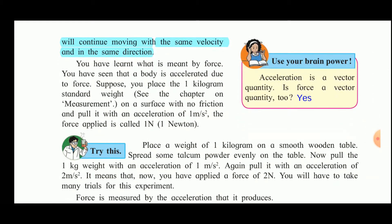Now you have learned what is meant by force. You have seen that the body is accelerated due to the force. Suppose you place one kilogram of stranded wheat on a surface with no friction and pull it with an acceleration of one meter per second square — the force applied is called one Newton. Acceleration is a vector quantity, and force is also a vector quantity.